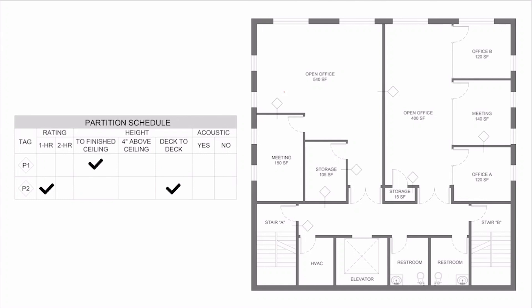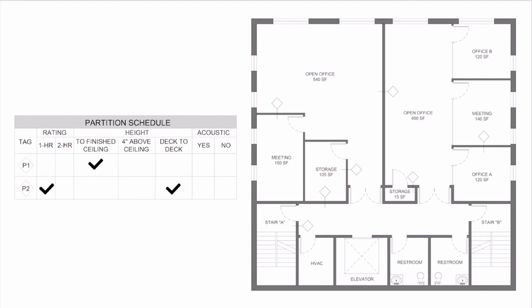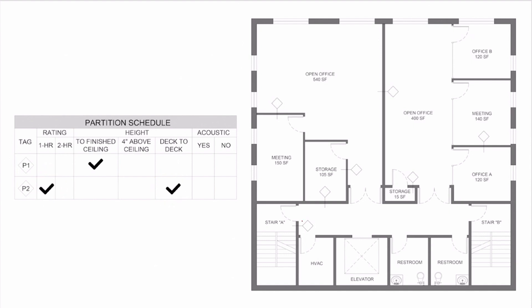On the plan, we have partition tags — the diamonds with the line. Those diamonds are tagging that wall to tell a contractor how to build it or describe the properties of that wall. From the partition schedule, P1 is a non-rated wall — it is not fire rated, does not have a rating check mark, and it goes up to the finished ceiling. We know fire rated partitions go deck to deck, so this confirms that. P2 is our one hour rated partition — it's checked one hour and goes deck to deck.